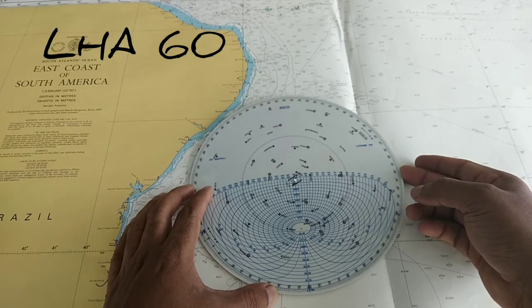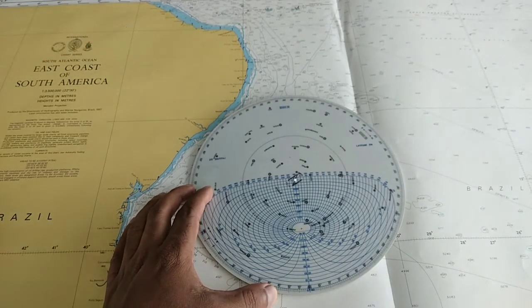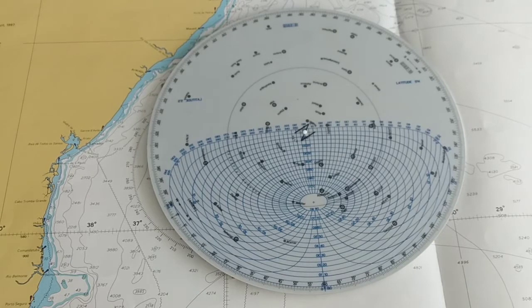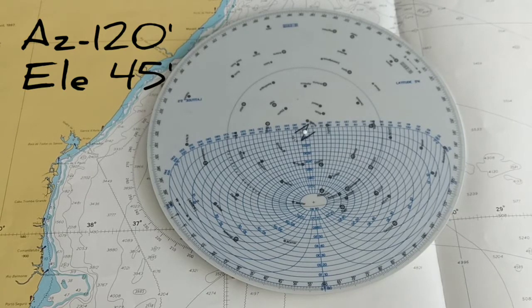I calculated LH Aries is 60 degrees. During my star observation, I want to find a star where the azimuth is 120 degrees and the elevation is 45 degrees, roughly.